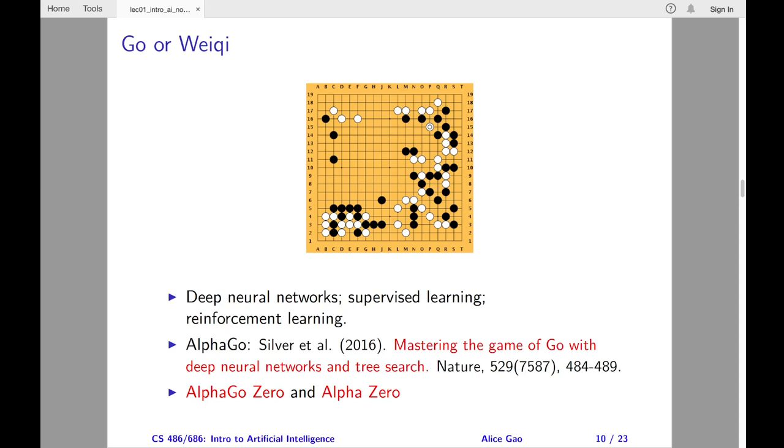Suppose that we want to surround one space on the board. In the middle of the board, surrounding one space requires four stones. If we do this on a side, we need three stones. Finally, if we do this in a corner, we need two stones only. This is why players tend to start by putting stones in the corner and on the sides, and only moving to the middle towards the end of the game.